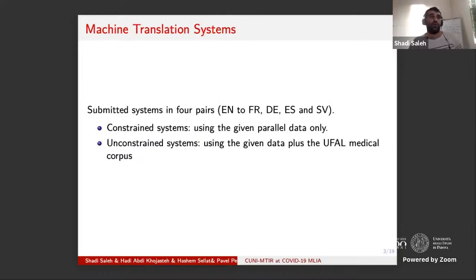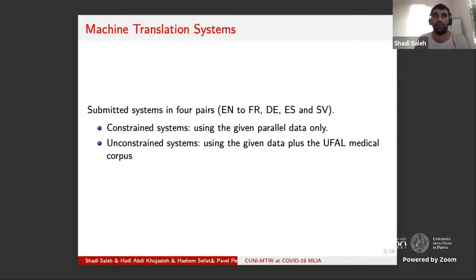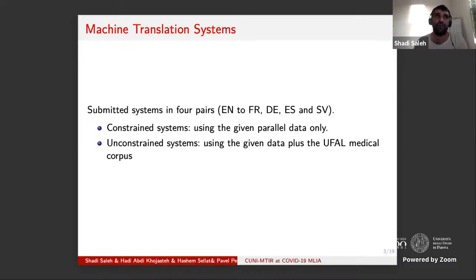In the machine translation task, we had the option to design constrained and unconstrained systems. The constrained systems could only use data given by the organizers without any external data. The data contained around 1 million parallel sentences around the COVID domain. We used this data to design four models from English to French, German, Spanish, and Swedish — and also models in the other direction. So we have models in both directions.